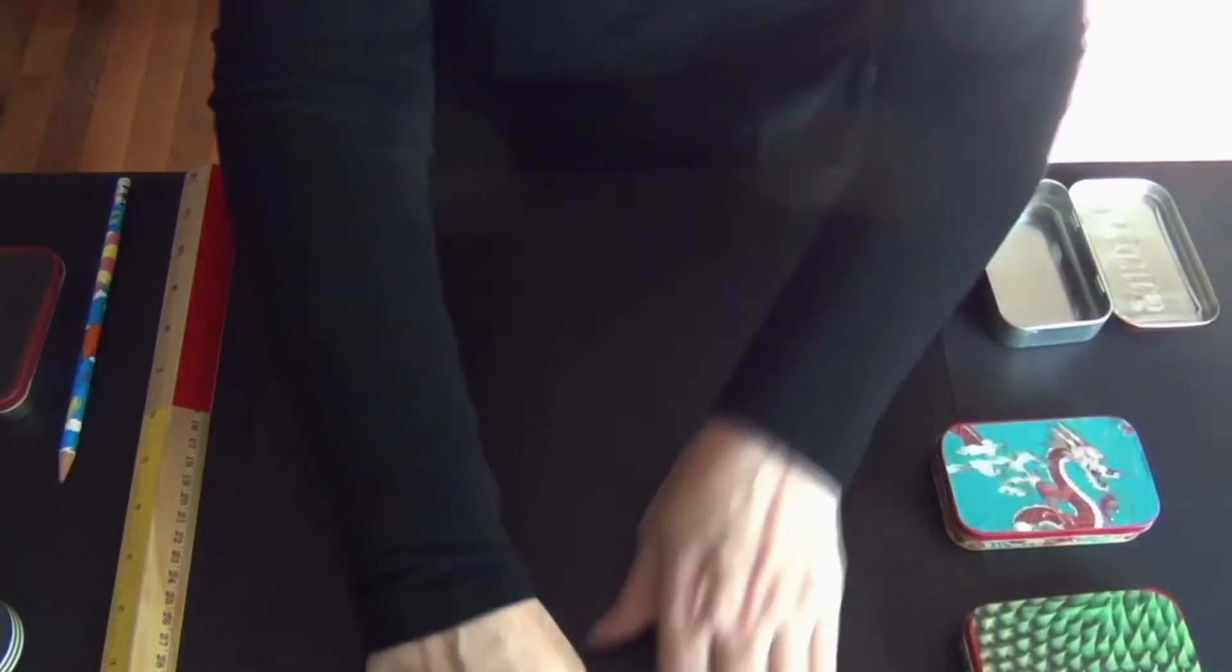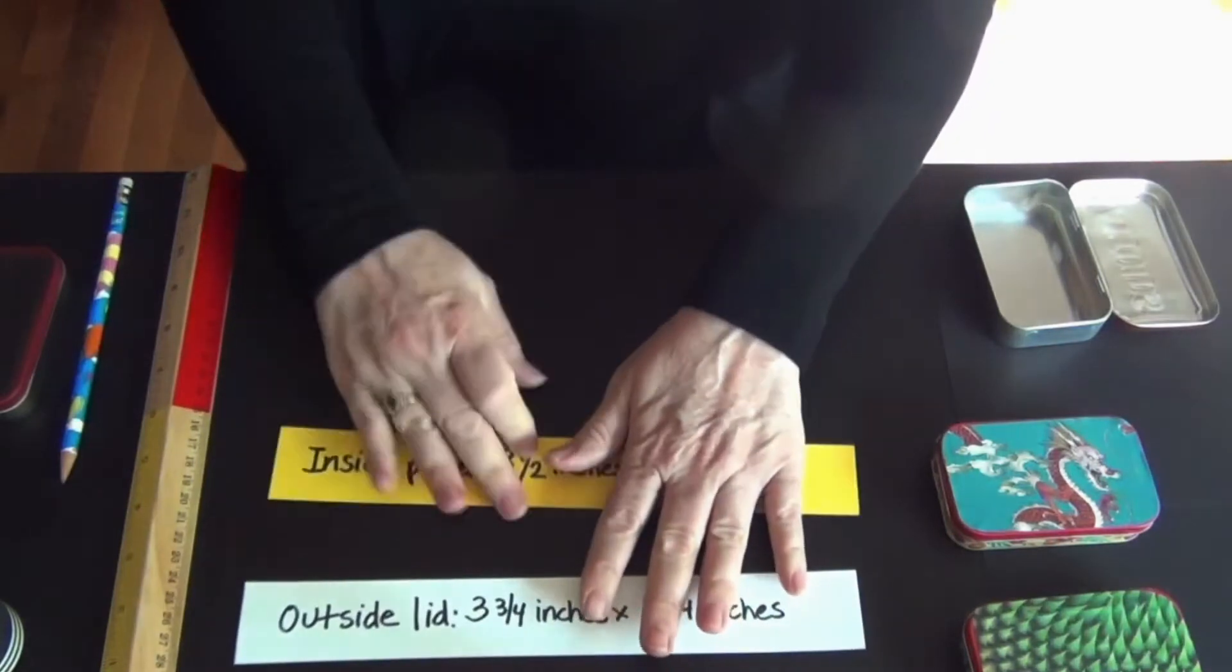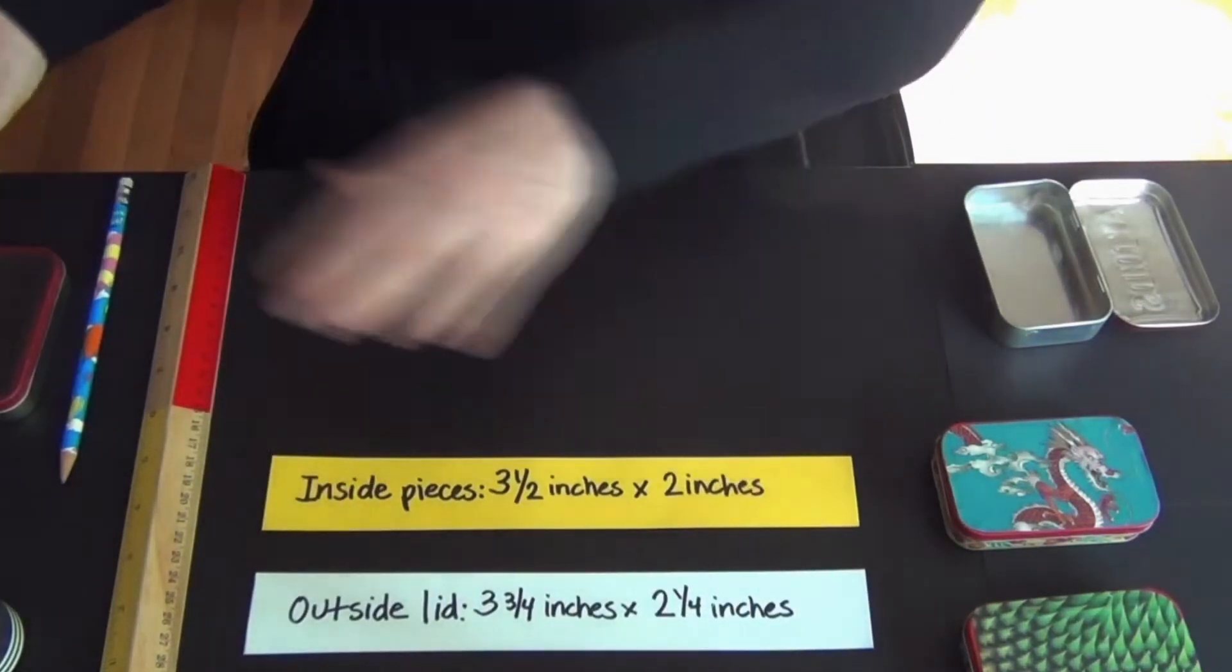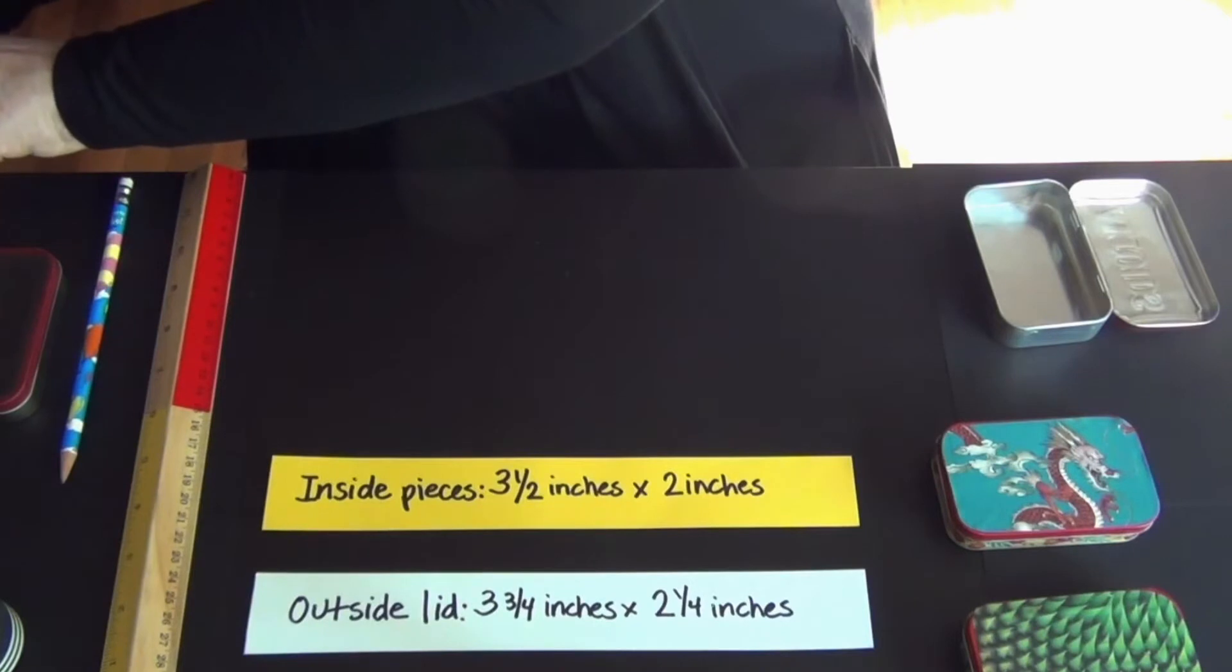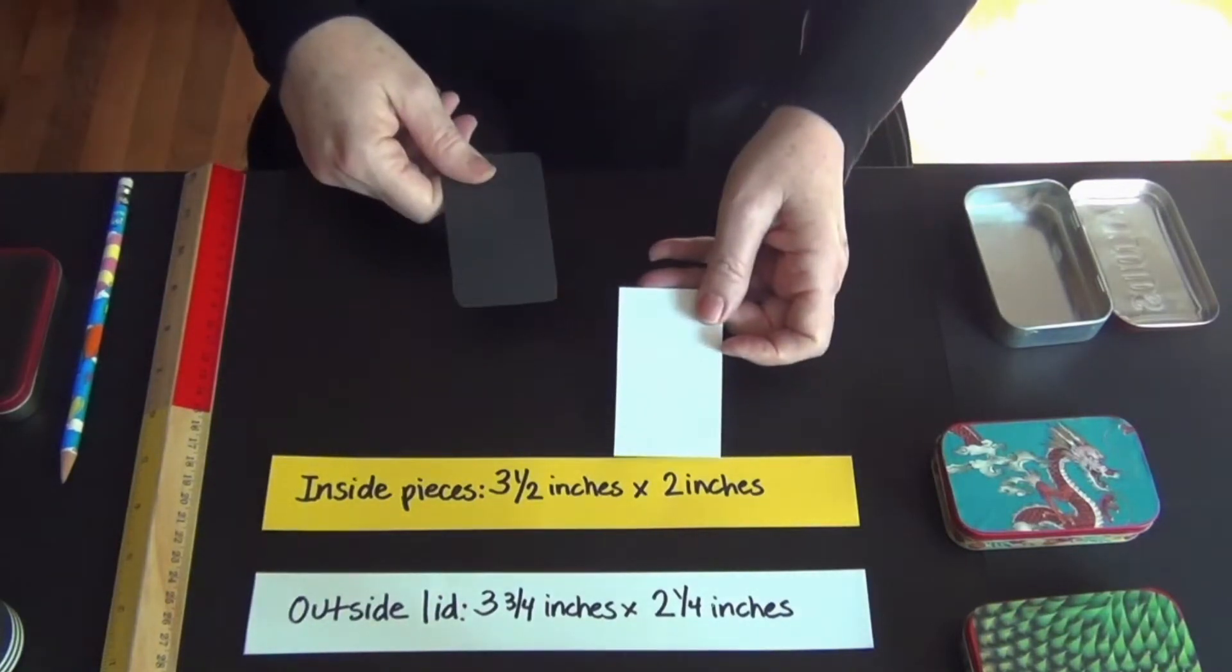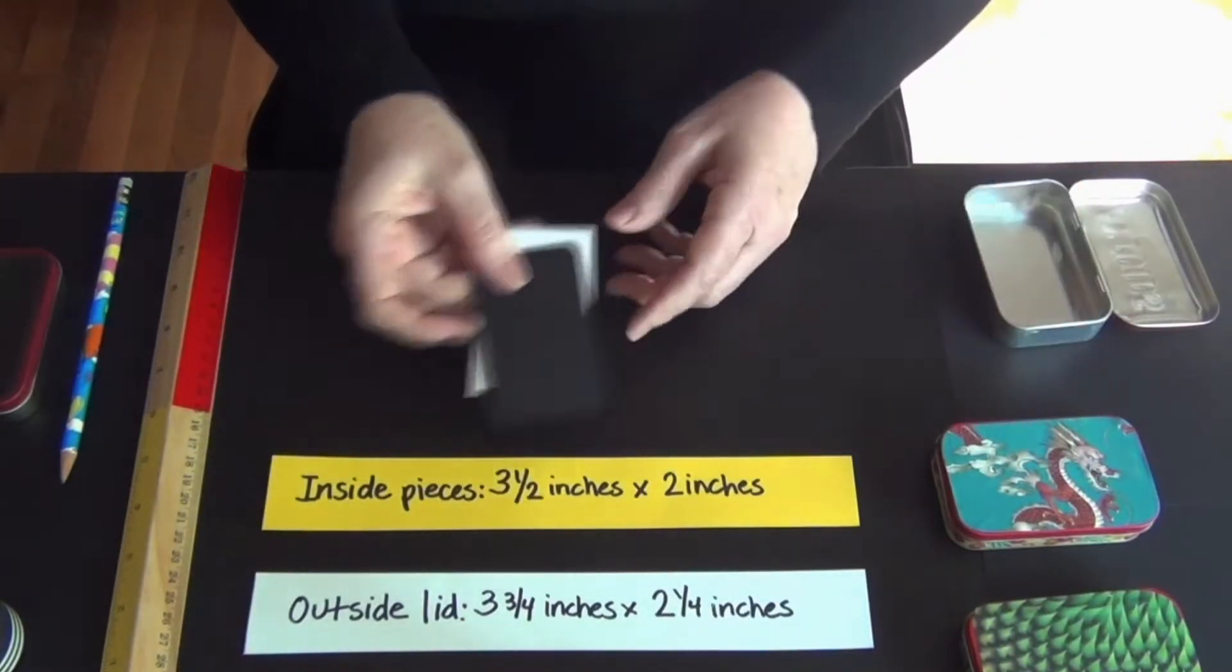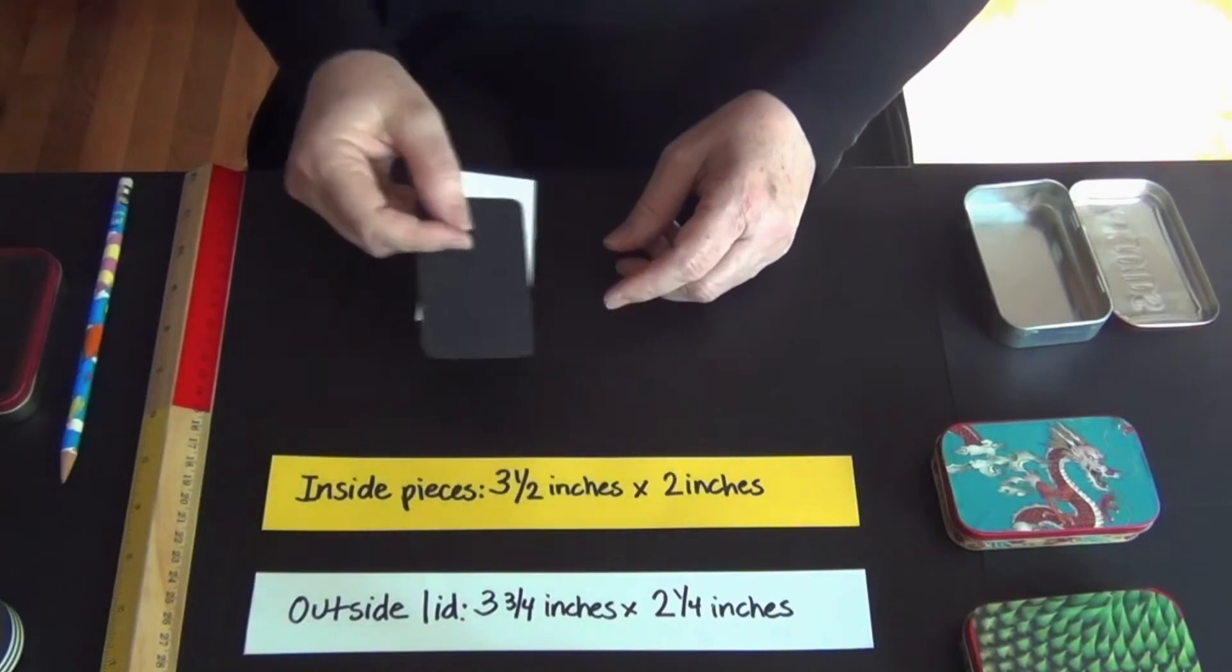There you go. Let's go through one and see how we did this. Here are the dimensions. The inside pieces are three and a half inches by two inches. That's what this size is. And the lid is a little bigger because it's on the outside. It's three and three quarter inches by two and a quarter inches.